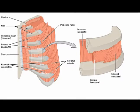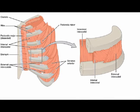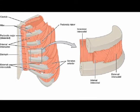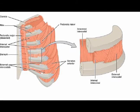There are three layers of intercostal muscles: the external intercostal muscles, the internal intercostal muscles, and the intermost intercostal muscles.